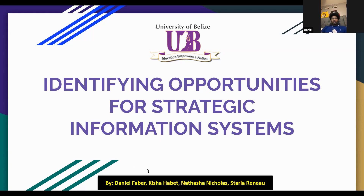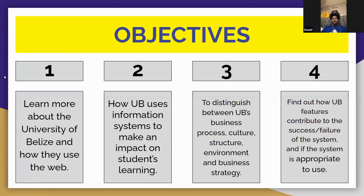We will start off with our objectives. In this PowerPoint, you shall be able to: one, learn more about the University of Belize and how they use the web; two, how UB uses information systems to impact students' learning; three, distinguish between UB's business processes, cultures, structures, environment, and business strategies; and four, find out how UB features contribute to the success and failure of the system and if the system is appropriate to use.